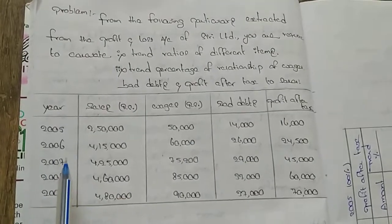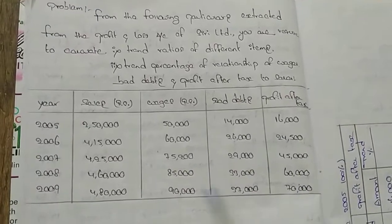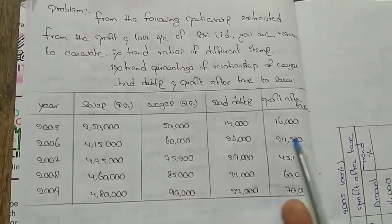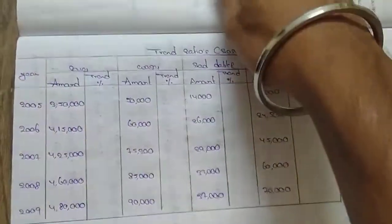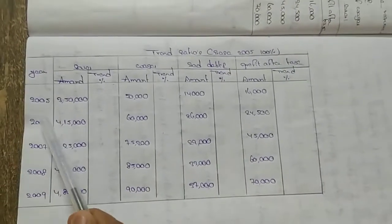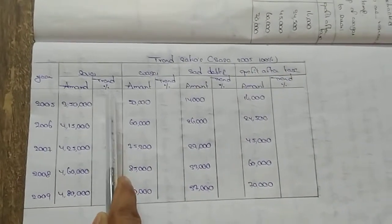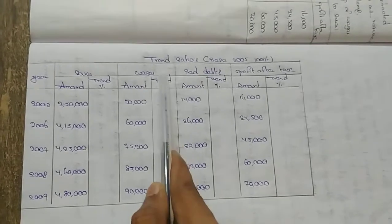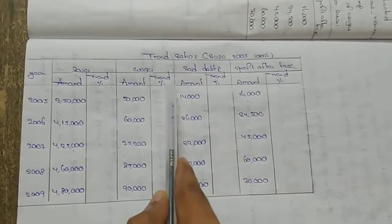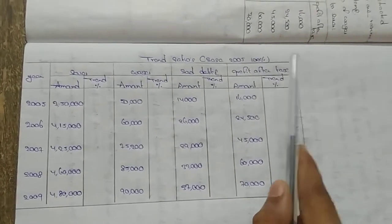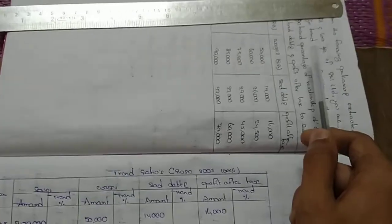The answer format table has columns for years 2005 through 2009, with rows for sales, wages, bad debts, and profit after tax. In the answer format, there is an 'amount' column and an extra 'trend percentage' column. The same structure applies to bad debts and profit after tax.